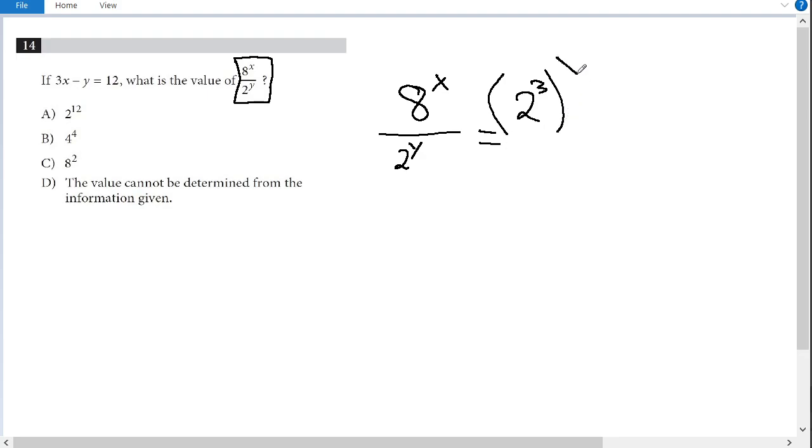So we have 2 cubed to the power of x all over 2 to the y. And I know if I raise an exponent to the power of an exponent, all I have to do to combine is multiply. So 2 to the 3x over 2 to the y.